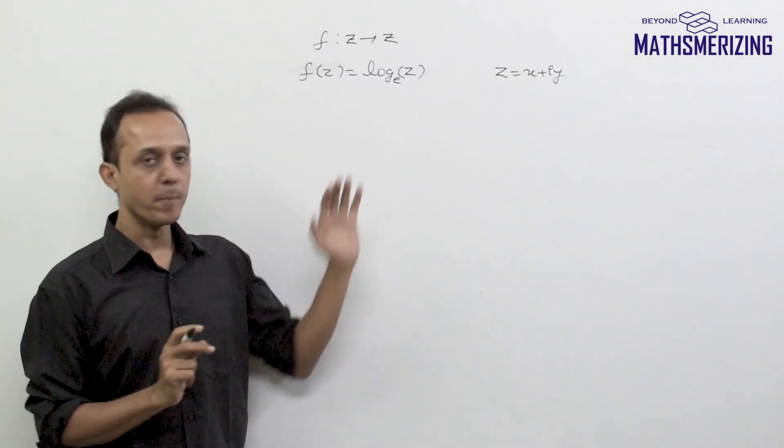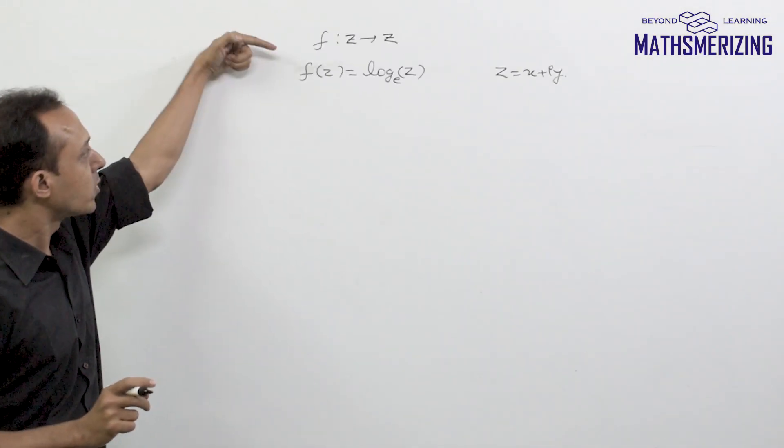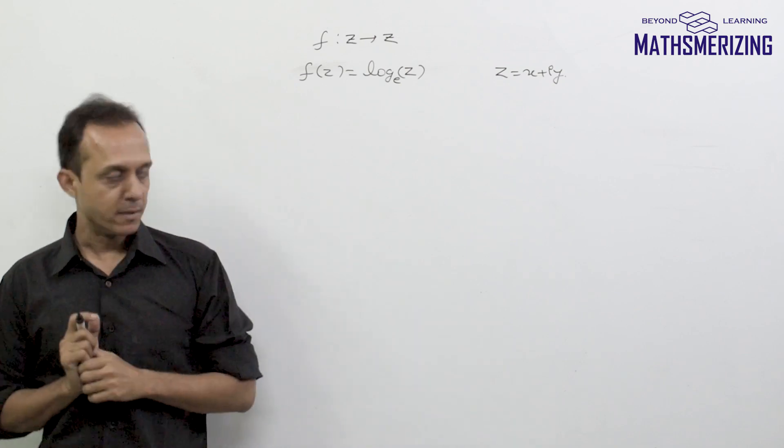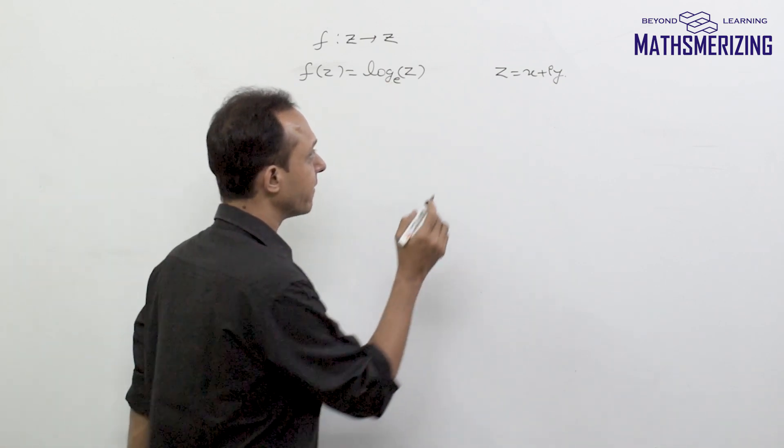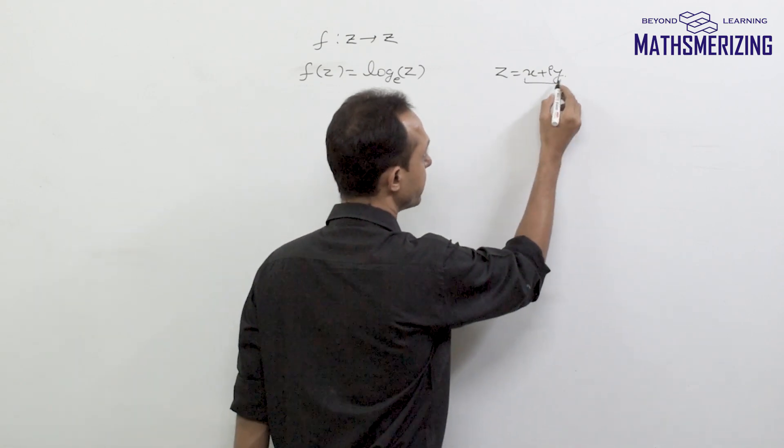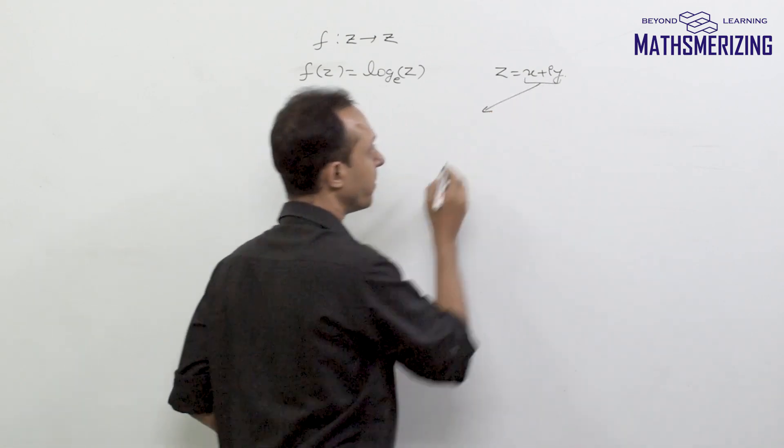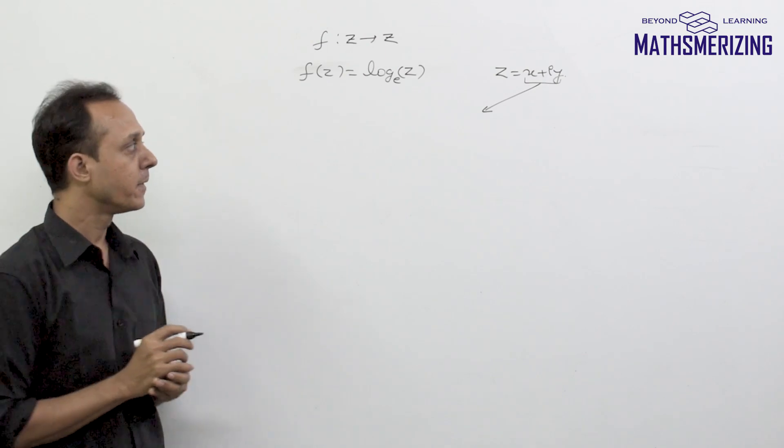So now having studied basics of complex numbers, we'll find out how to find log of a complex number. Now if we have to find logarithm of a complex number, then the first thing that we need to do is, we need to express complex numbers which is in the form x plus i*y in Euler's form.